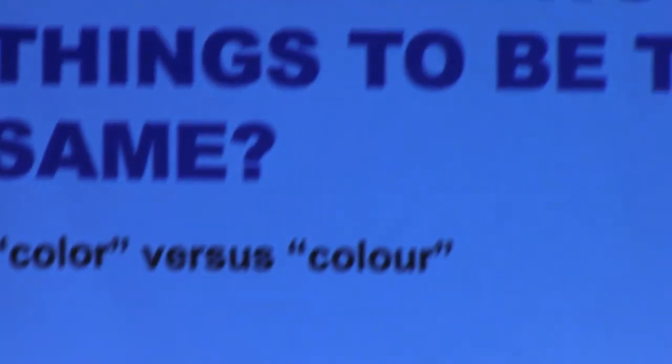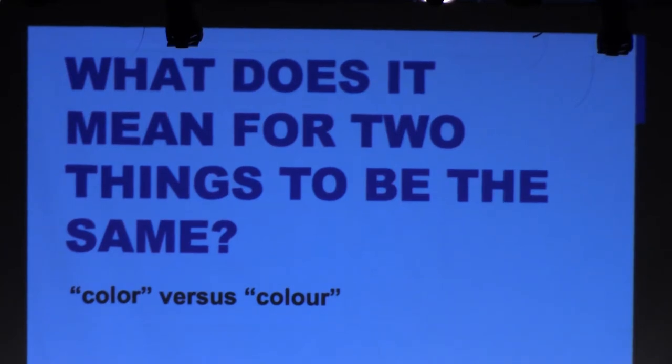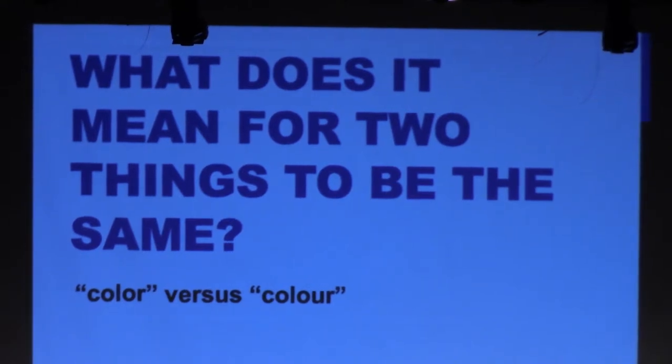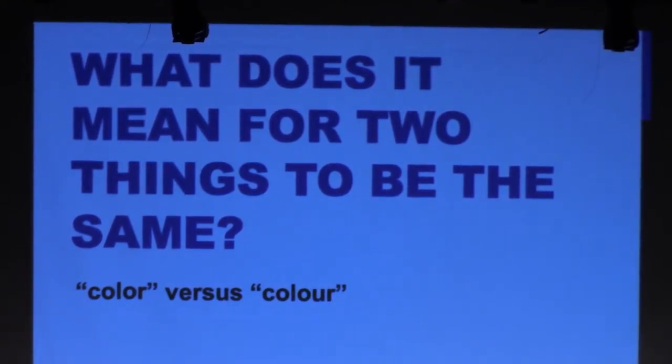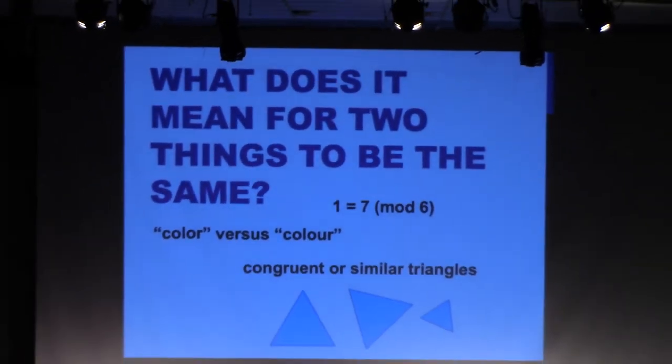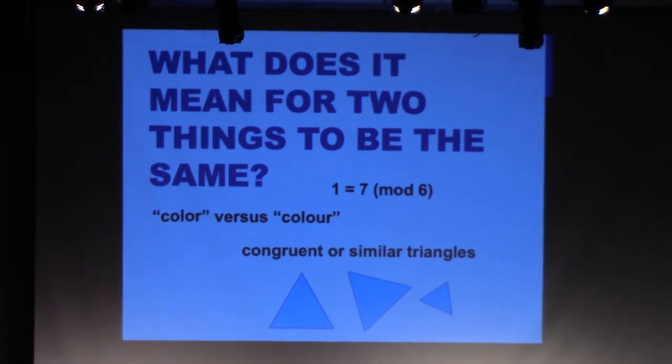So when I was talking to the students, I started out by telling them a little bit about what topology is, so I had them think about what does it mean for two things to be the same. An example is color versus colour with a U are literally different words, but we consider them to be the same since they correspond to the same entry in the dictionary. Other examples are modular arithmetic and congruent or similar triangles. So what I mean by this is our notion of sameness changes depending on the context and what we want to accomplish.